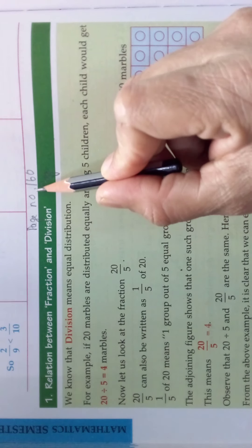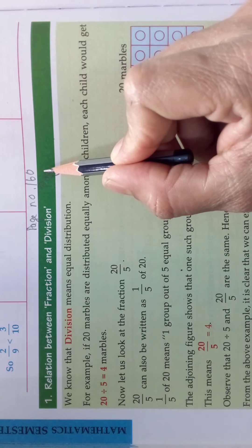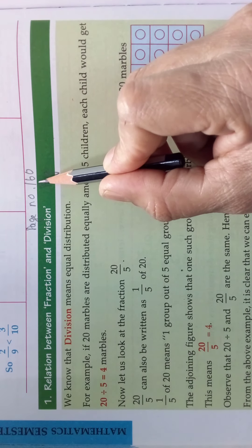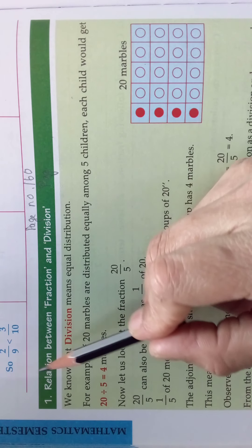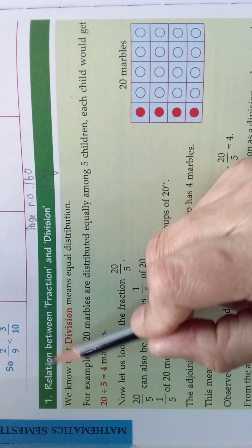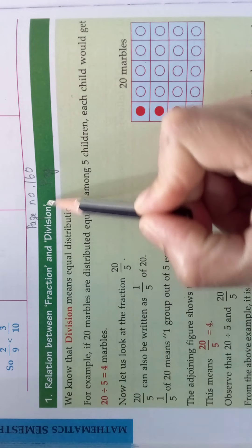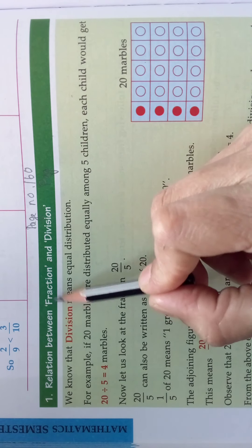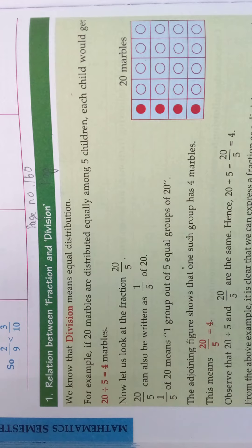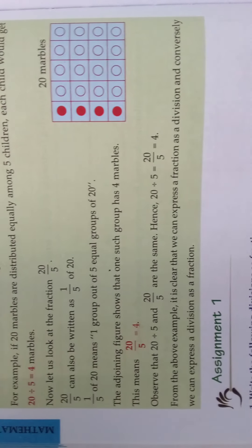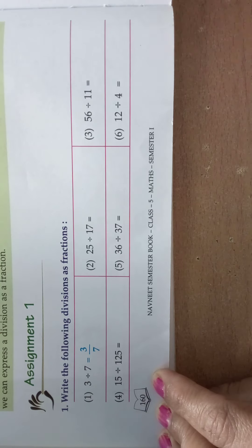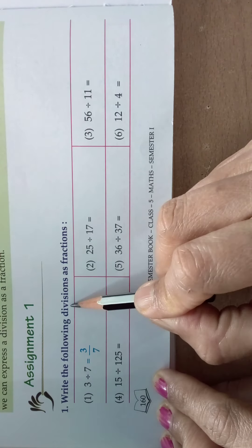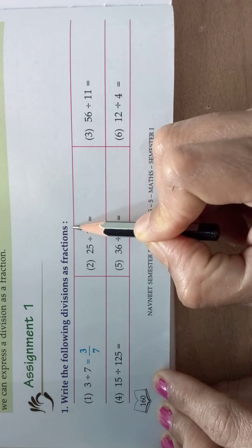Now take page number 160 in your textbook. We are going to see the relation between fraction and division — how we are going to write a division as a fraction. Look here, Assignment 1: write the following divisions as fractions.